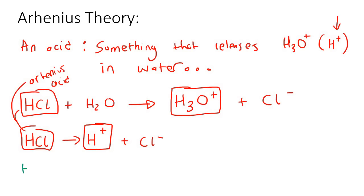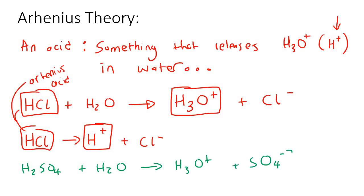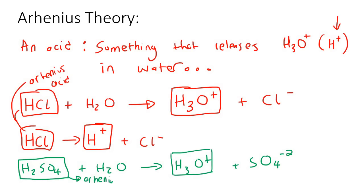Another example would be H2SO4 plus H2O giving us H3O+ and SO4 2−. We can see that we put the H2SO4 in water and look at what we produced — we produced H3O+. So because of that, we can say that H2SO4 must be an Arrhenius acid.